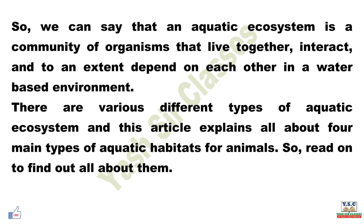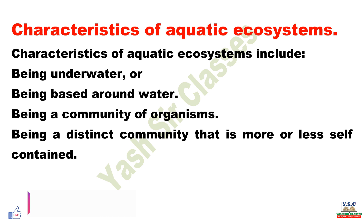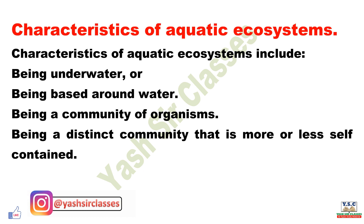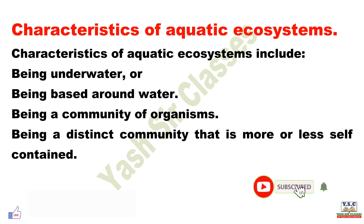There are various different types of aquatic ecosystem. This article explains all about the four main types of aquatic habitats for animals. Characteristics of an aquatic ecosystem include being underwater or being based underwater, being a community of organisms, and being a distinct community that is more or less self-contained.